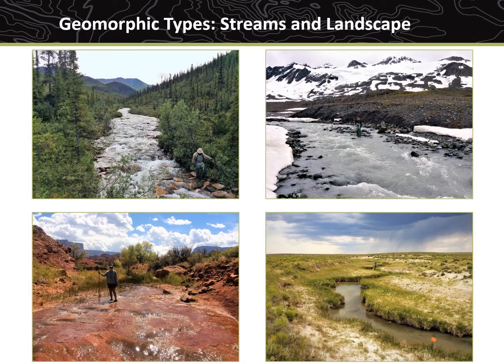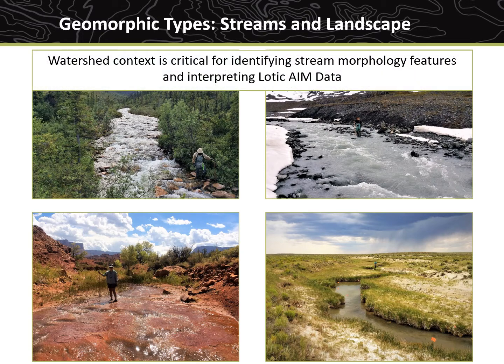In addition to classifying streams by flow permanence, it can also be helpful to think about streams relative to their position in a watershed and the size of the stream or river. Headwater mountain streams have very different characteristics than streams that drain lower elevation shrublands, grasslands, or deserts. Many BLM districts contain a combination of these stream types and ecosystems. Keeping this watershed context in mind is critical for identifying stream morphology features and interpreting Lotic AIM data.